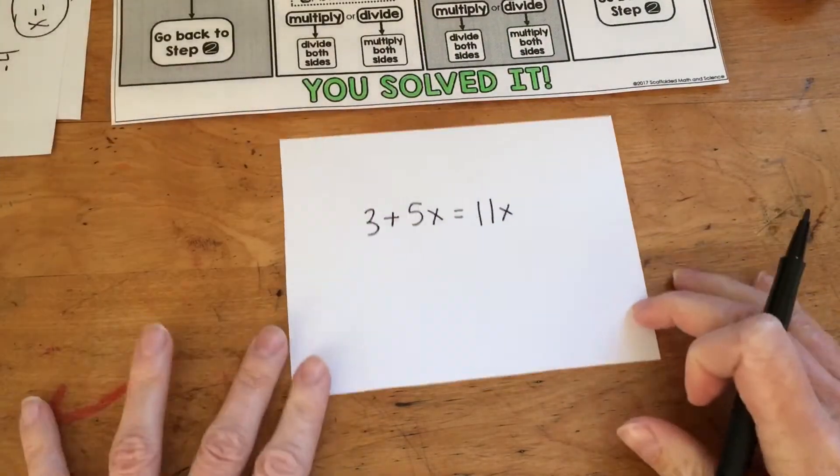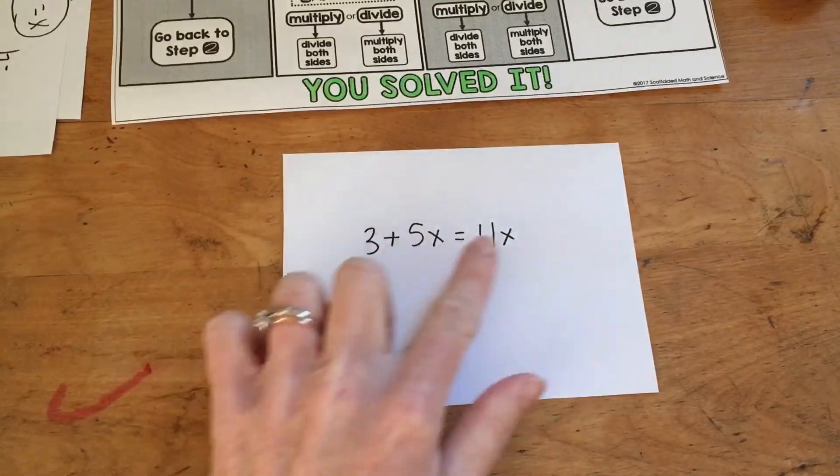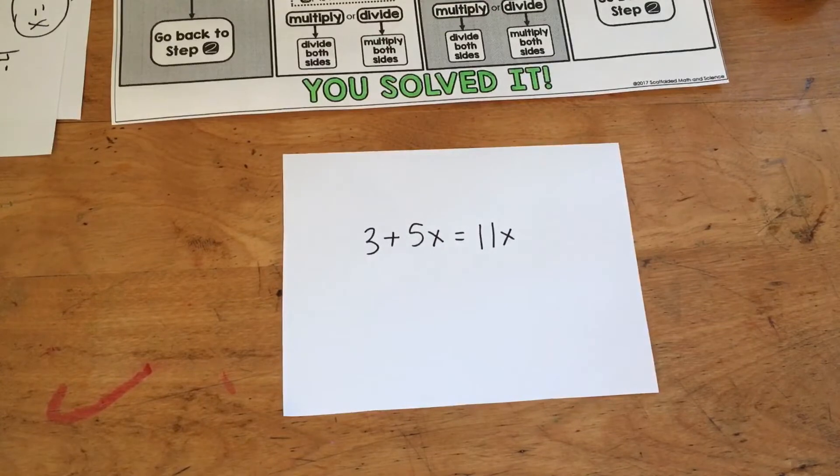Here's another one that's kind of like that. Which side has two terms? The left side. Which of these is a like term to the 11x on the other side? 5x.